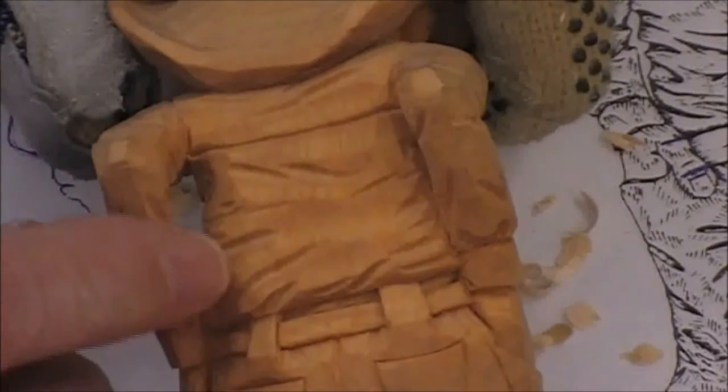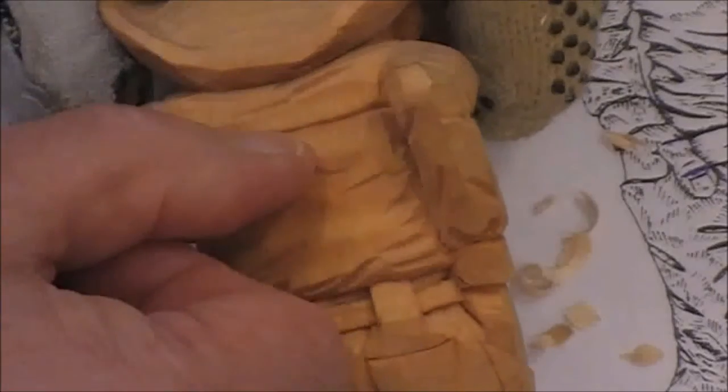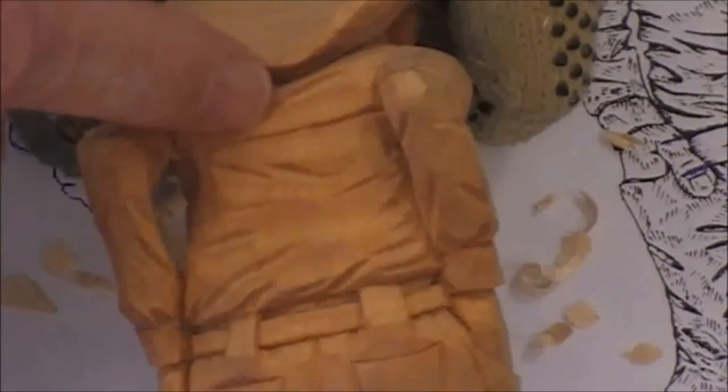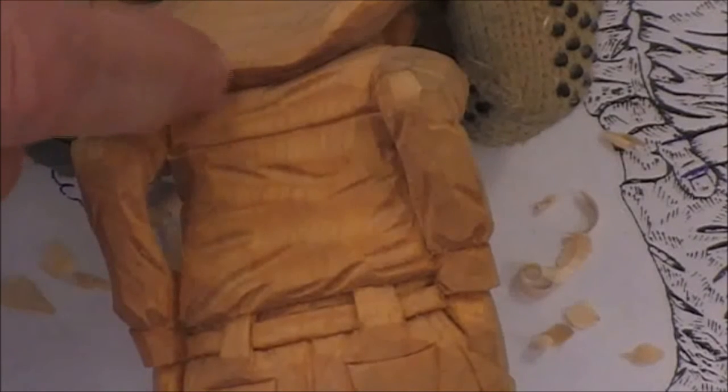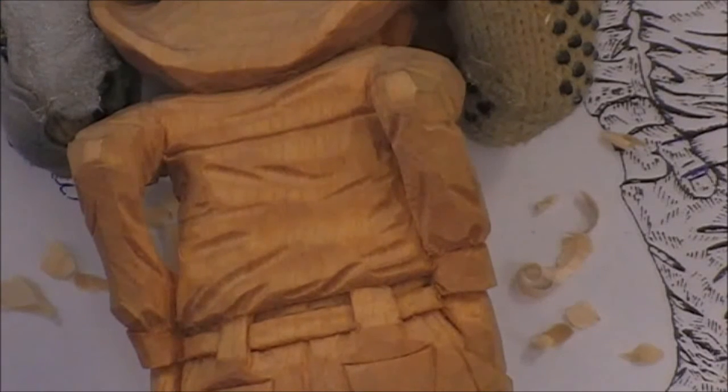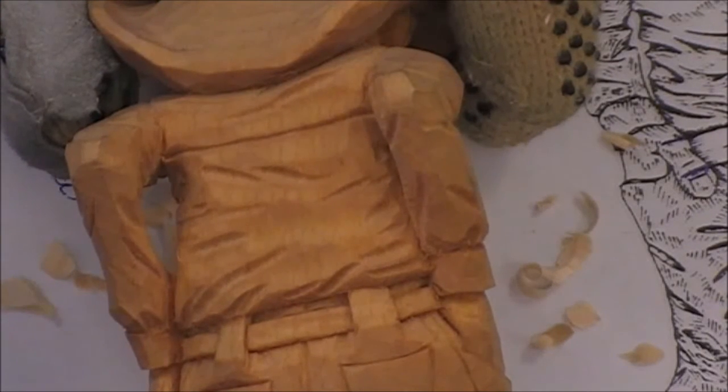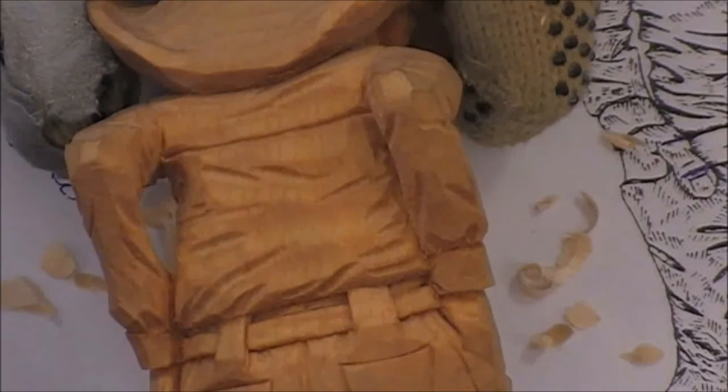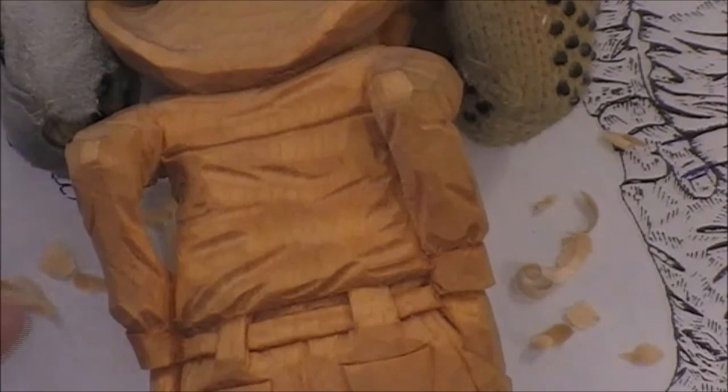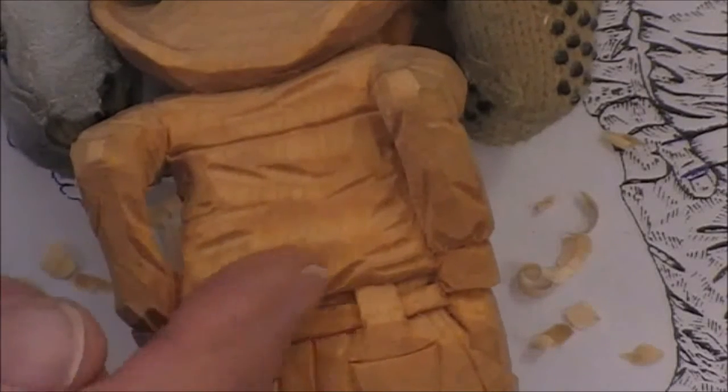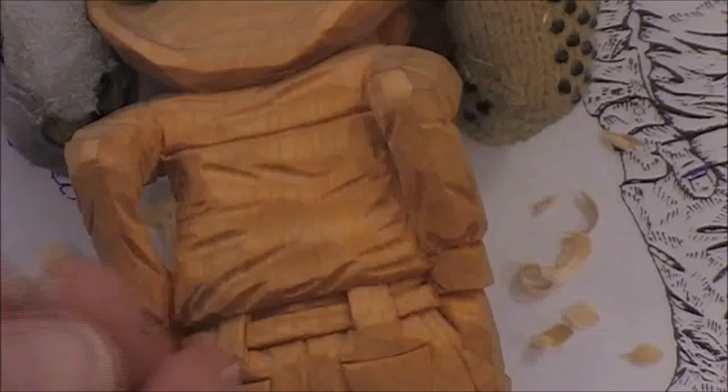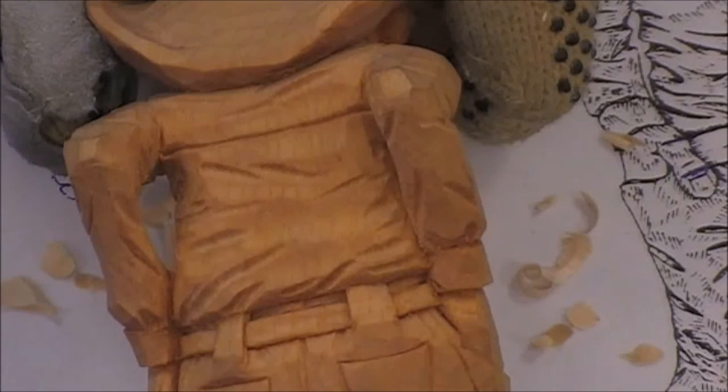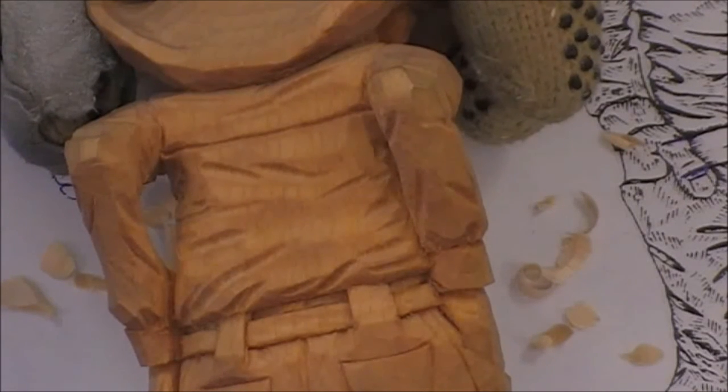The back, it depends on what design you want to have. This line's going straight across here indicates, on a cowboy shirt, that there's an extra shoulder piece that goes across from side to side. But you can see that the cuts are across. And these cuts down here indicates the compression of the excess material over top of the belt.